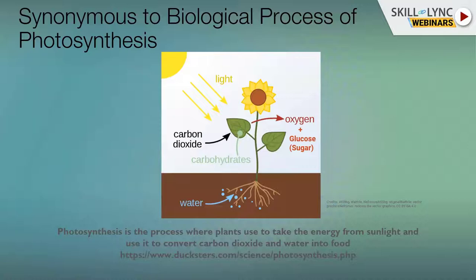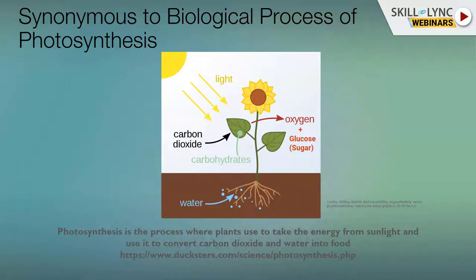The term synthesis is synonymous to a biological process called photosynthesis, which we read in elementary school. By definition, it's the process where plants take energy from sunlight and convert it into carbohydrates and food. In the same way, we can think of sunlight as the input for synthesis, which is our RTL. The plant can be our synthesis engine, and the output of oxygen and other chemical substances is basically our netlist and other files.